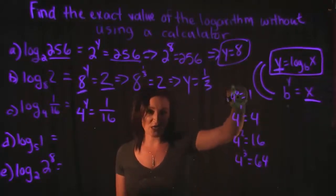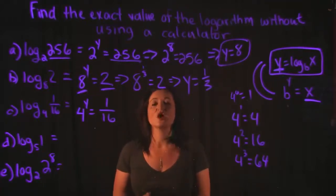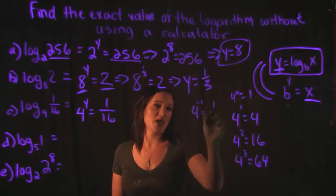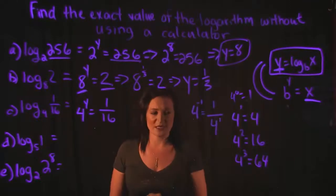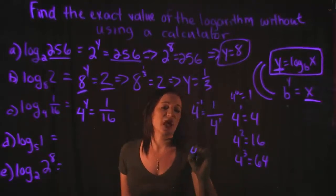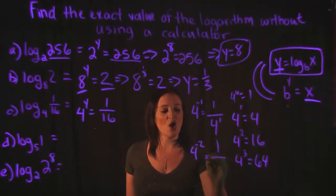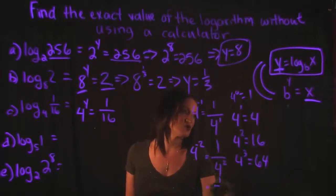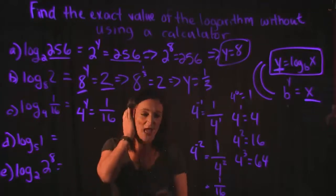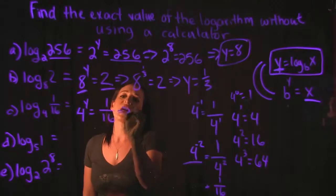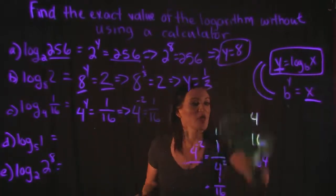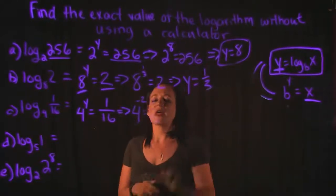Since the zero exponent is too big, we need to look into negative exponents. Four to the negative one gives us one over four — not quite. Four to the negative two gives us one over four squared, which is one over sixteen. That's exactly what we're looking for. So four to the negative two equals one over sixteen, which means Y is equal to negative two.